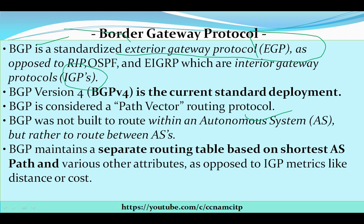The next thing about BGP is that it was not built to route within an autonomous system. BGP was not built — it is not restricted — but rather it was not built to route within an autonomous system (AS), but rather to route between ASes. I will talk in my next videos about what it means to route between autonomous systems, with a deep explanation by examples.